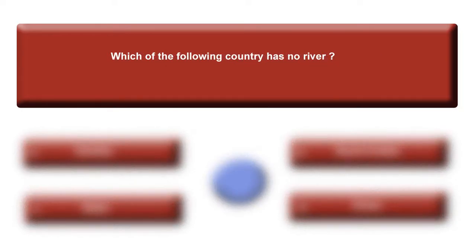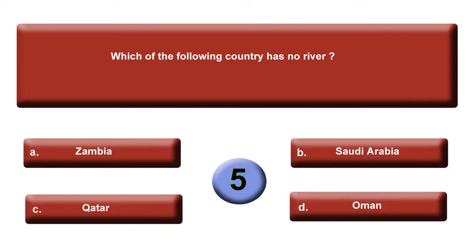Which of the following country has no river? Good question. Options: A, Zambia; B, Saudi Arabia; C, Qatar; or option D, Oman. Time is up. Answer is B, Saudi Arabia.